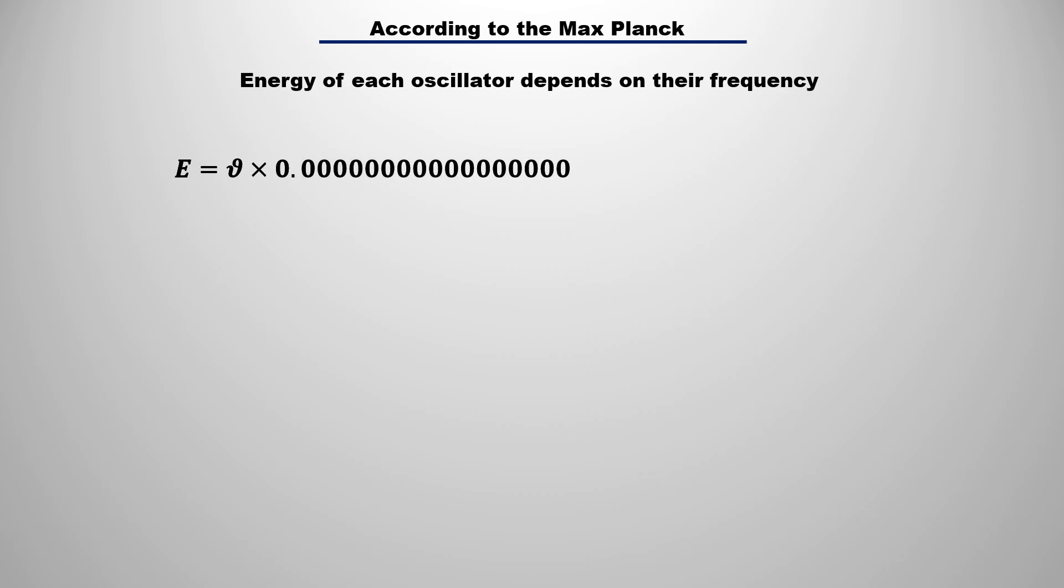Max Planck challenged this theory of classical physics and said that it is not possible. He said that if oscillators are oscillating with different frequencies, then their energy will also be different. For this, he suggested that if an oscillator oscillating with the frequency nu, then its energy will be equal to the multiple of the frequency and a very small tiny number. This number is a constant.